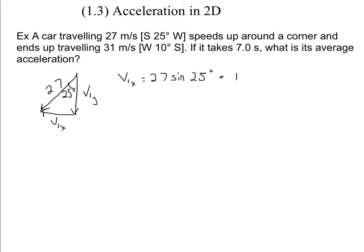The direction of that vector, just as a reminder, the x component or the x vector is pointing to the west. The y component, similarly, is just going to be 27 times the cosine of 25 degrees, and that works out to 24.47 meters per second, and that guy's pointing south. So there's the components for the first one.